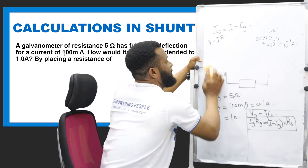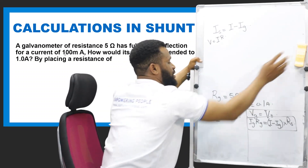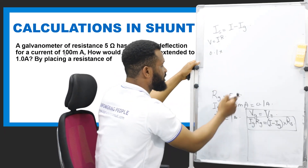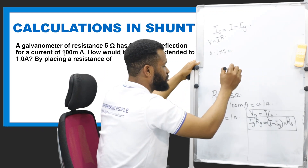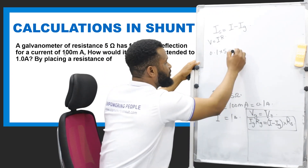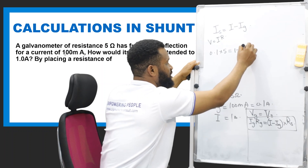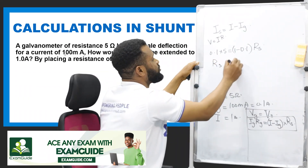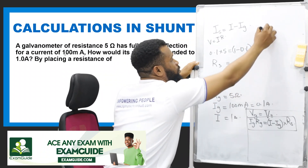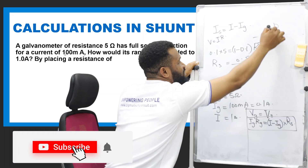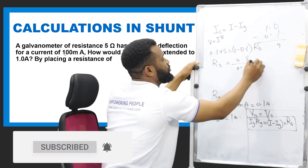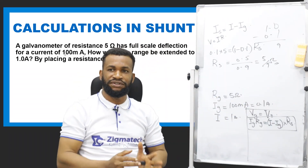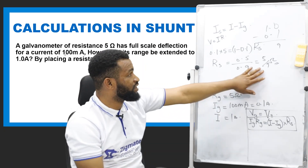Let's put it here. Current of the galvanometer is 0.1, resistance of the galvanometer is 5, which equals the shunt current — that is 1 minus 0.1 = 0.9 — multiplied by the resistance of the shunt. So the resistance of the shunt is 0.5 divided by 0.9, which is 5/9 ohms. That is the resistance of the shunt — a very low resistance. The galvanometer resistance is 5 ohms, which is much higher.